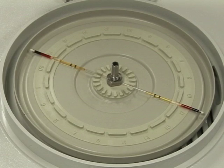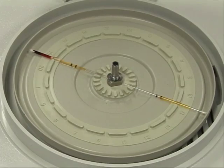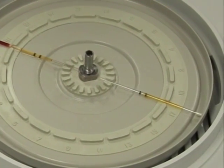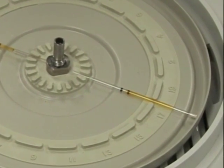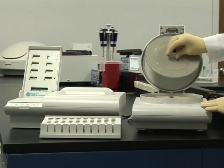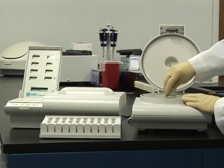If there is an odd number of tubes, an empty accutube must be used to balance the centrifuge. Once the accutubes are loaded, replace the rotor cover.